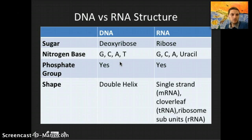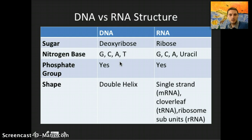To review, let's look at DNA structure compared to RNA structure. One difference is the sugar: DNA uses deoxyribose and RNA uses ribose. DNA contains guanine, cytosine, adenine, and thymine; RNA contains the same except uracil replaces thymine. Both contain a phosphate group. DNA is a double helix — two strands — whereas RNA is generally a single strand. Messenger RNA is a single long ribbon, tRNA has a cloverleaf shape, and rRNA is found in ribosomes.